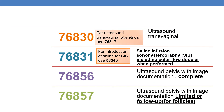Now let us discuss the description of various codes. Code 76830 is ultrasound transvaginal, non-obstetrical. For ultrasound transvaginal obstetrical, assign 76817. Code 76831 is saline infusion sonohysterography (SIS), including color flow Doppler when performed; for introduction of saline for SIS, use additional code 58340. Code 76856 is ultrasound pelvic with image documentation, complete; and 76857 is ultrasound pelvic with image documentation, limited or for follow-up.